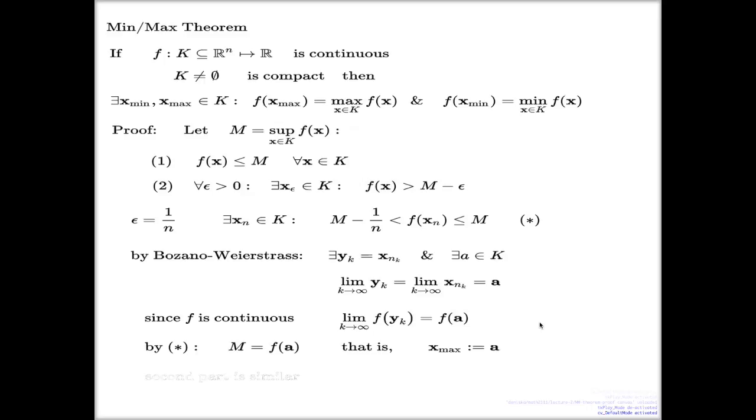If you want to see the second part of the theorem for x_min, you either can follow similar steps, although you will need to replace the supremum with the infimum, or there is a nicer trick to do that. Do you know the trick? How we can link the existence of min to the existence of max?